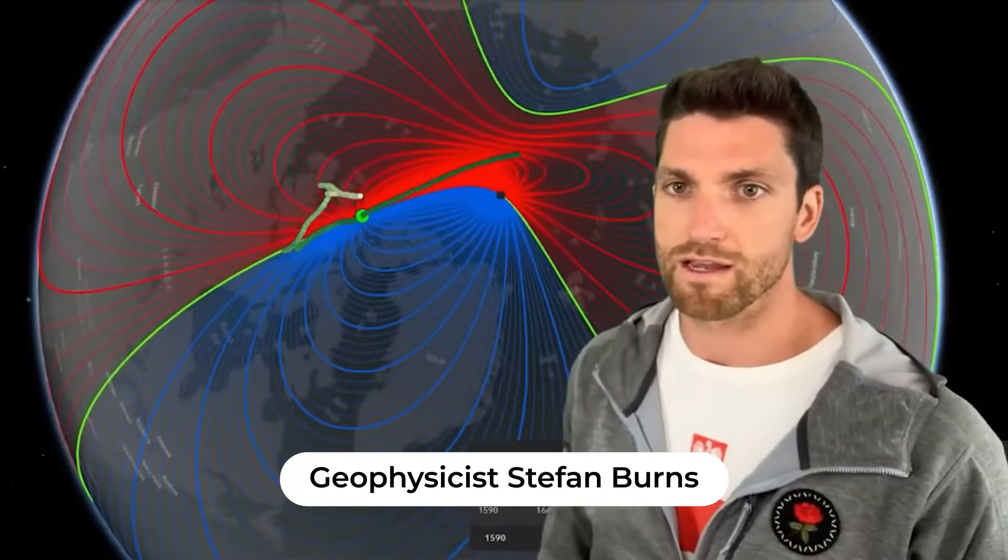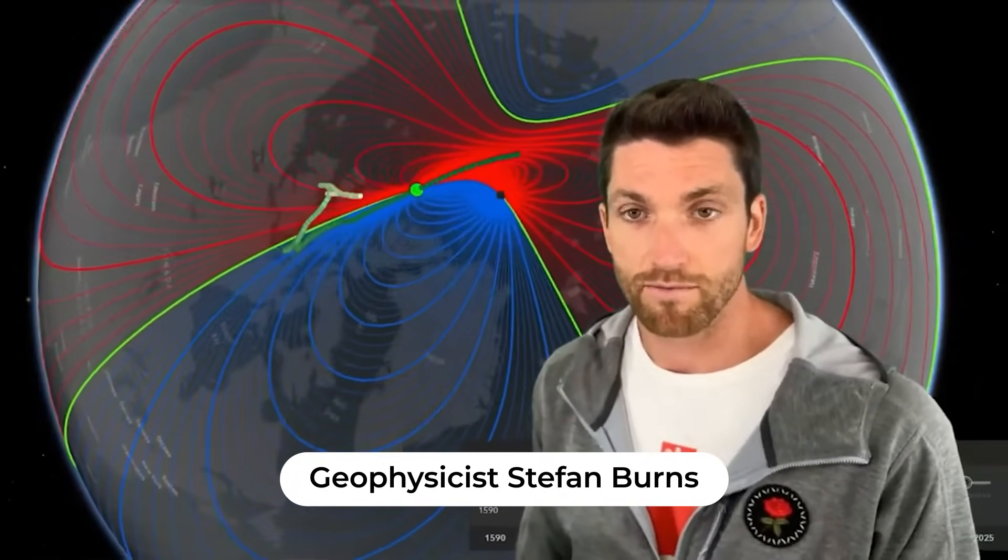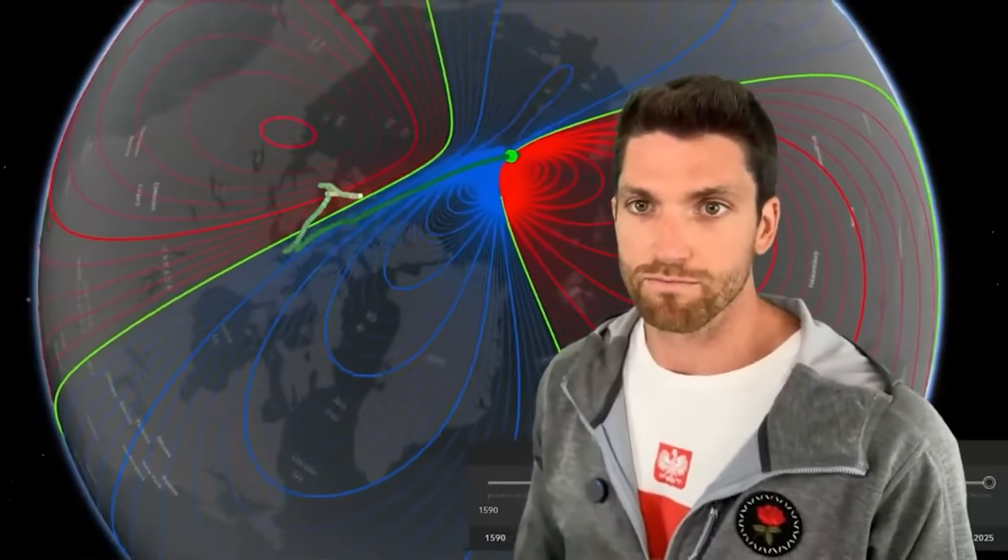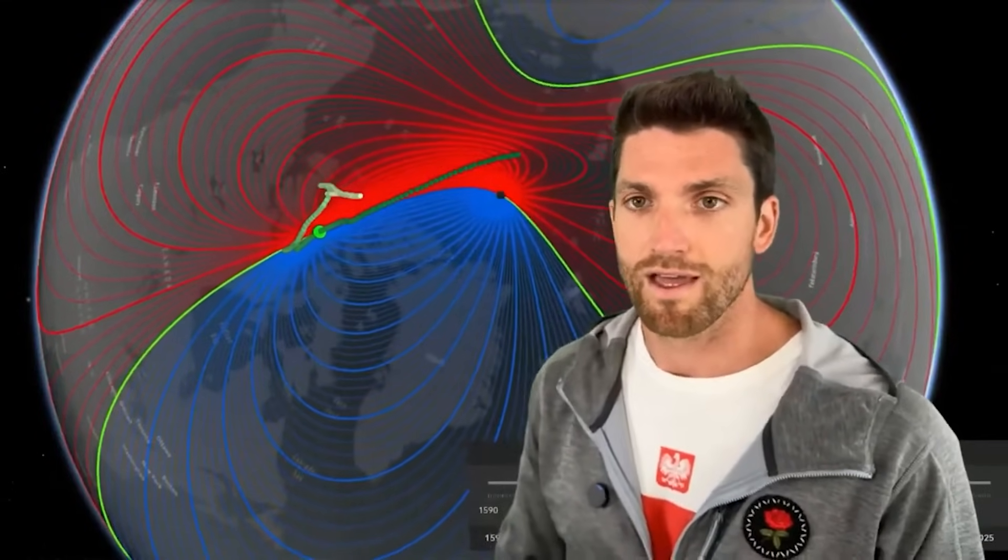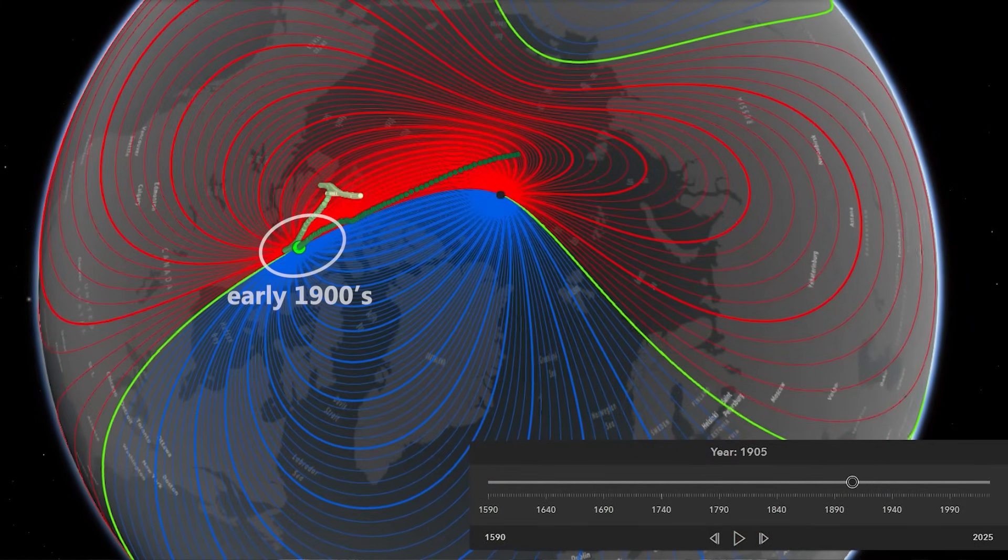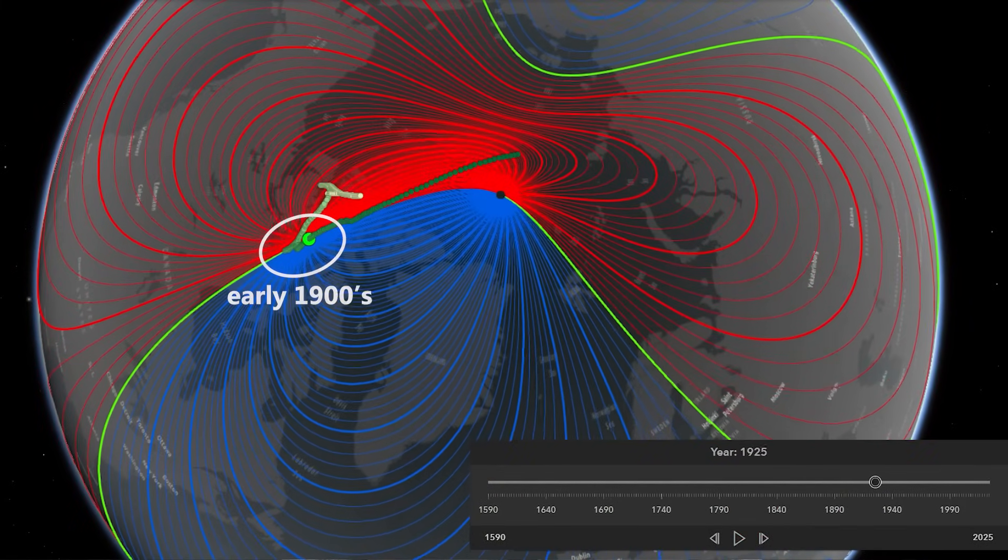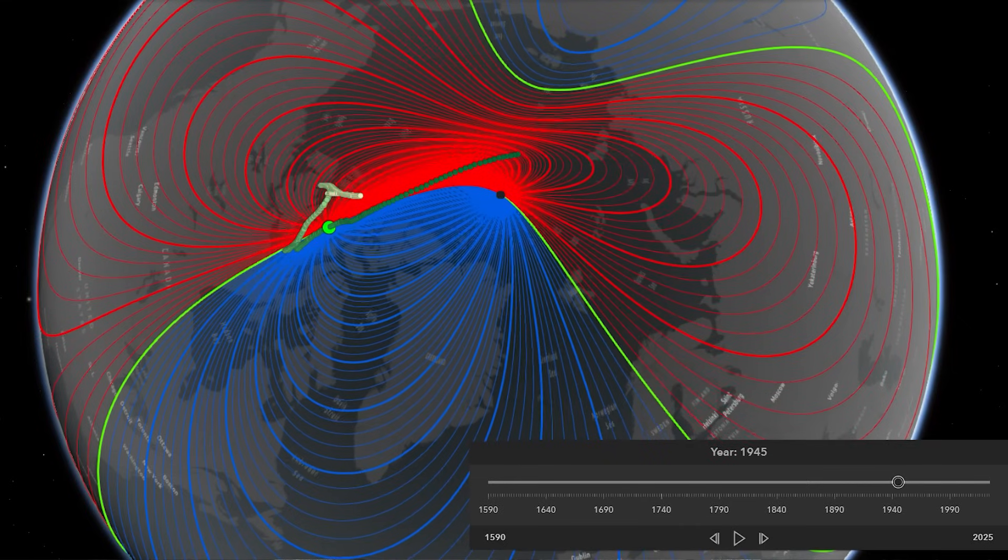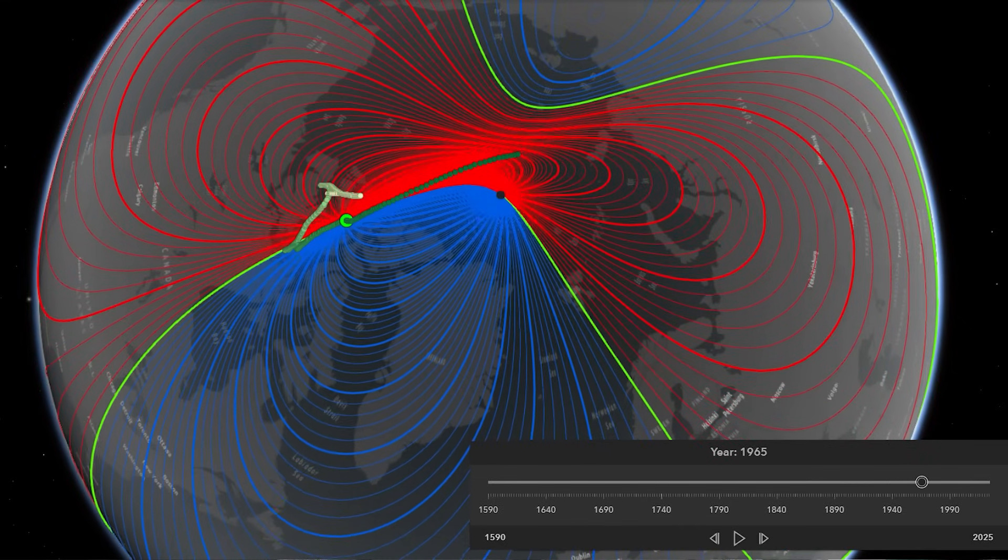Here we're looking at the movement of the magnetic pole in the Northern Hemisphere, a negative magnetic pole, so technically what they call a South Magnetic Pole, but we call it the North Magnetic Pole because it's in the Northern Hemisphere. We see that it was here in Canada in the early 1900s, and look at that rapid acceleration that started basically in the 90s.